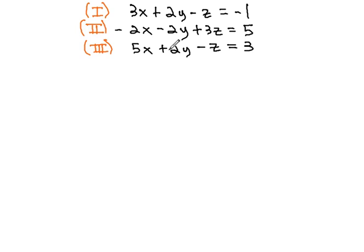When we have three equations and three variables, our strategy is going to be to eliminate the same variable twice so that we end up with two equations and two variables, which we should be very comfortable solving.